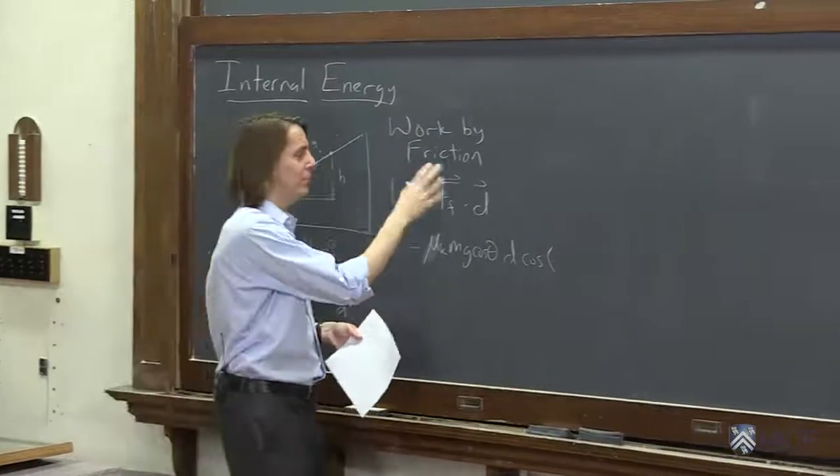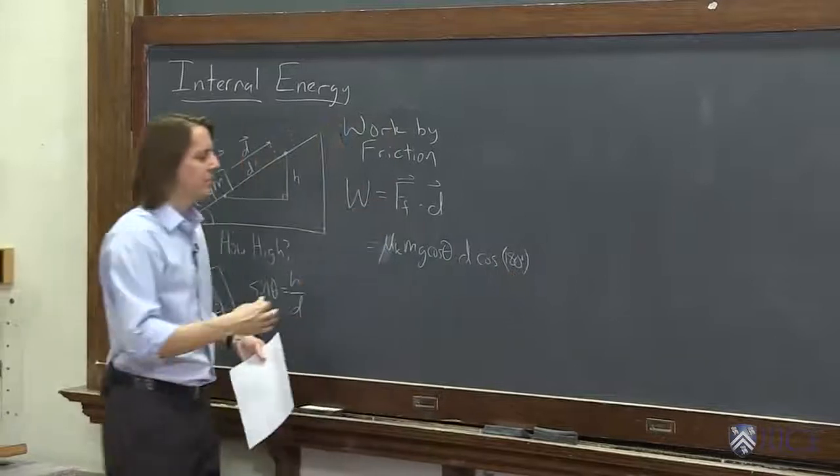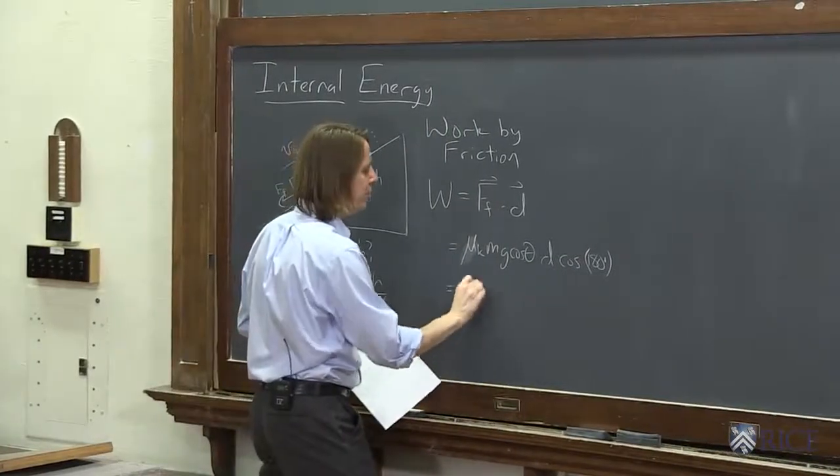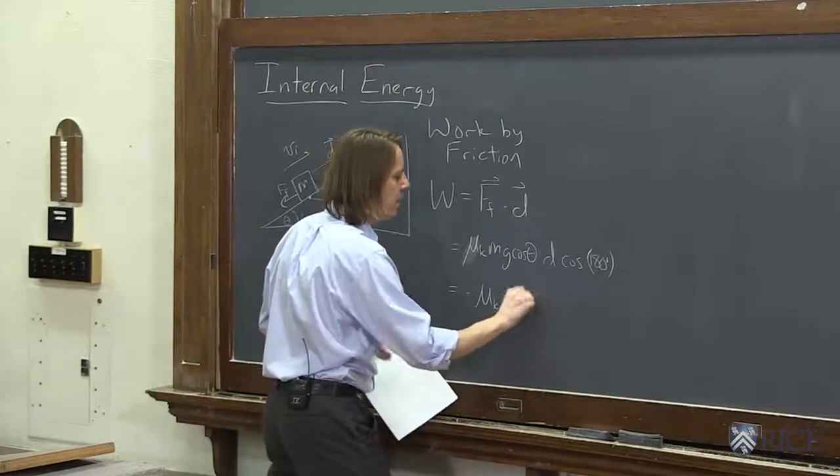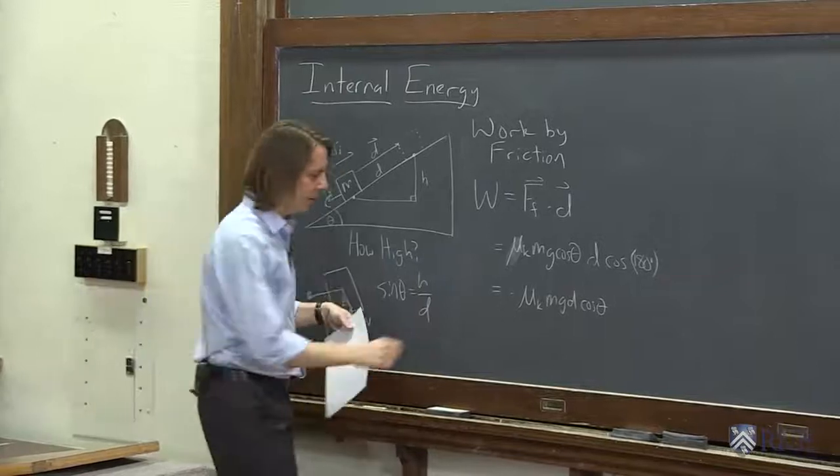So it's a dot product, magnitude, magnitude, angle between. Cosine of 180 degrees. So really, it's just bringing in the negative one. We know that the work is negative minus mu k, mg, d cosine theta, is the work that we care about.